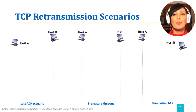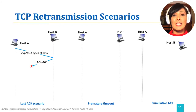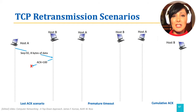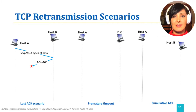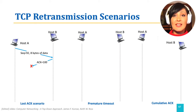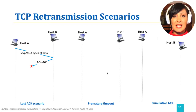Let's assume we are sending a segment with sequence number 92 and 8 bytes of data from host A to host B. The ACK for that segment, from host B to A, should contain the ACK for byte 100, indicating the next expected byte sequence number. If that ACK does not reach host A and is lost,